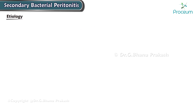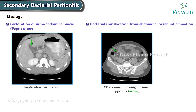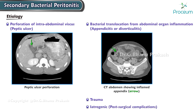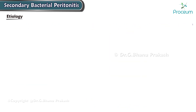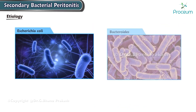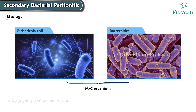Secondary Bacterial Peritonitis can arise from various causes, including perforation of an intra-abdominal viscus such as peptic ulcer, bacterial translocation resulting from abdominal organ inflammation like appendicitis or diverticulitis, trauma, or iatrogenic sources such as post-surgical complications. Escherichia coli and Bacteroides are the most common organisms.